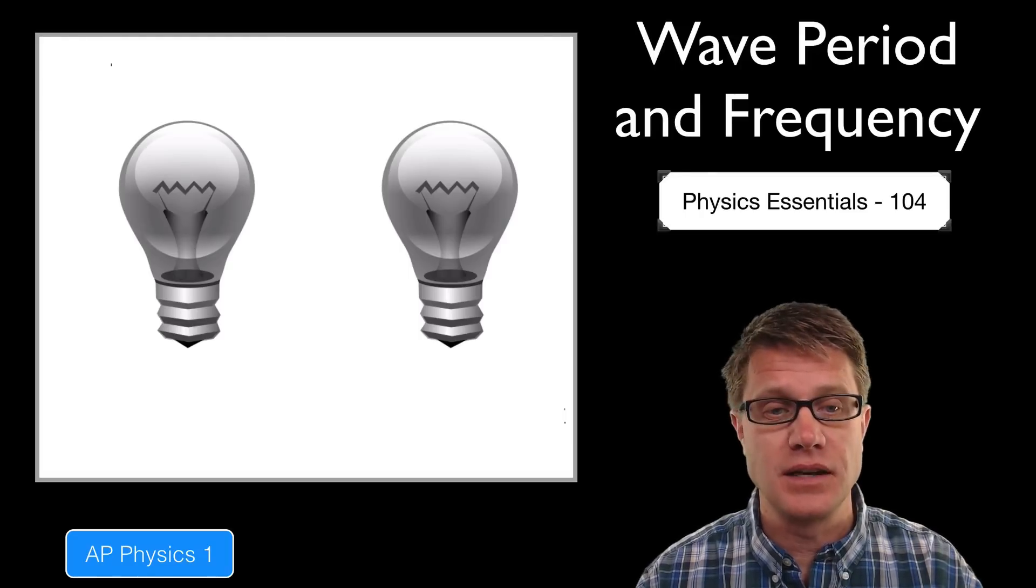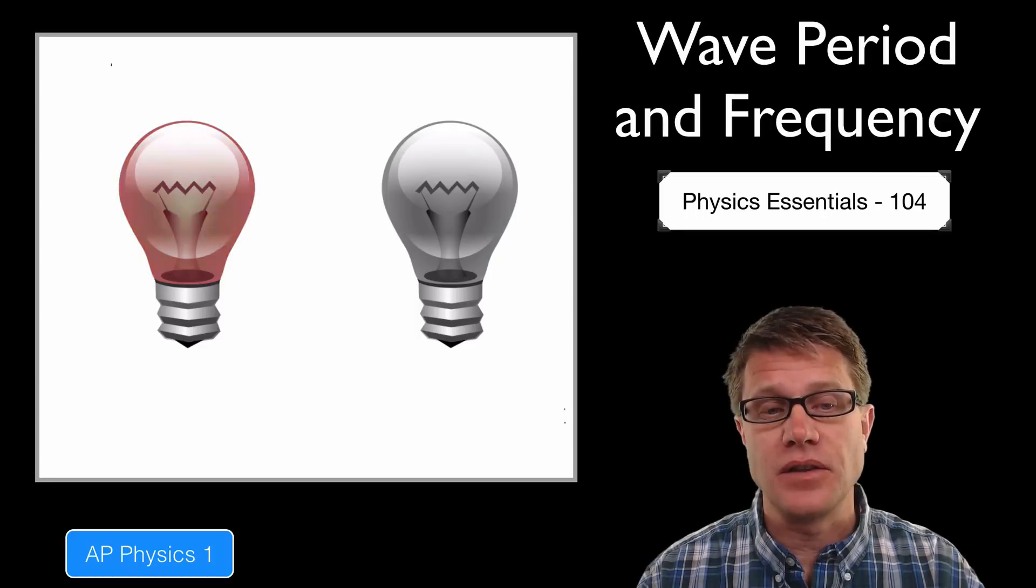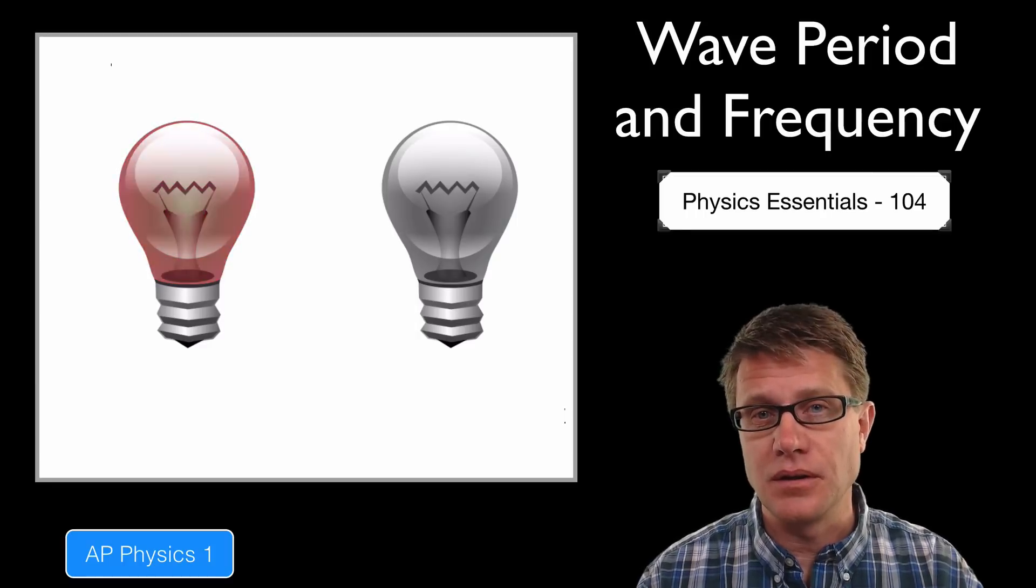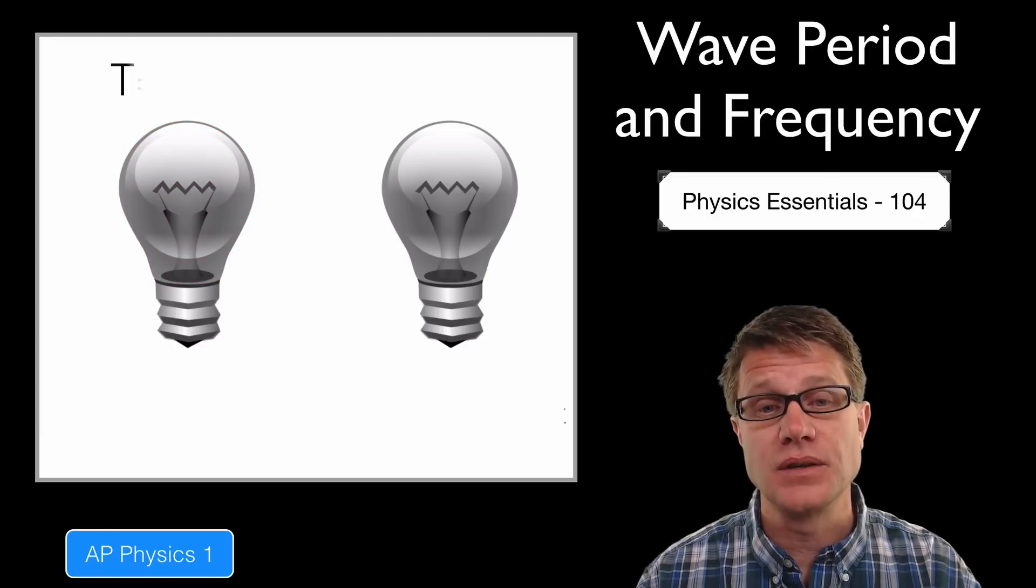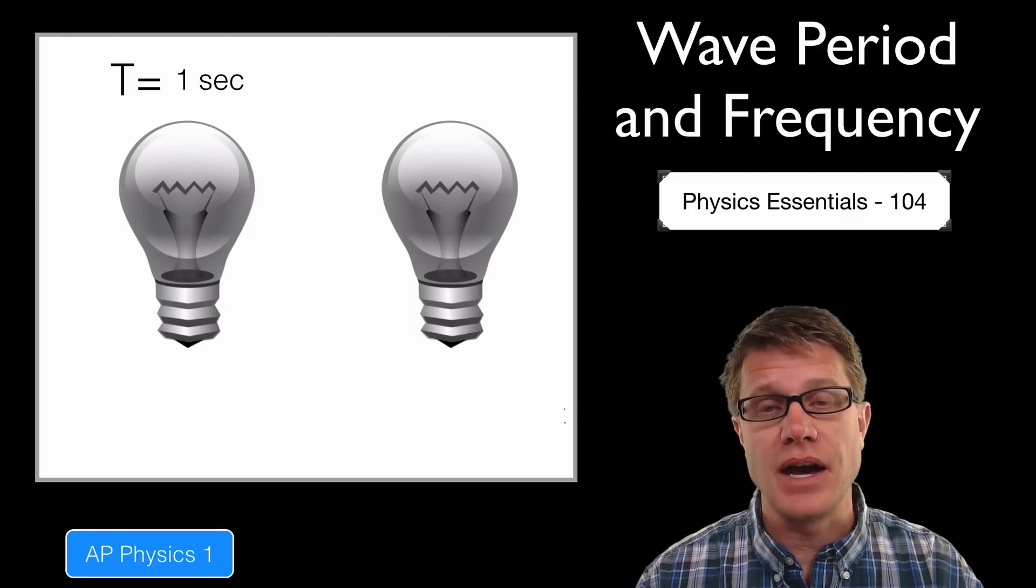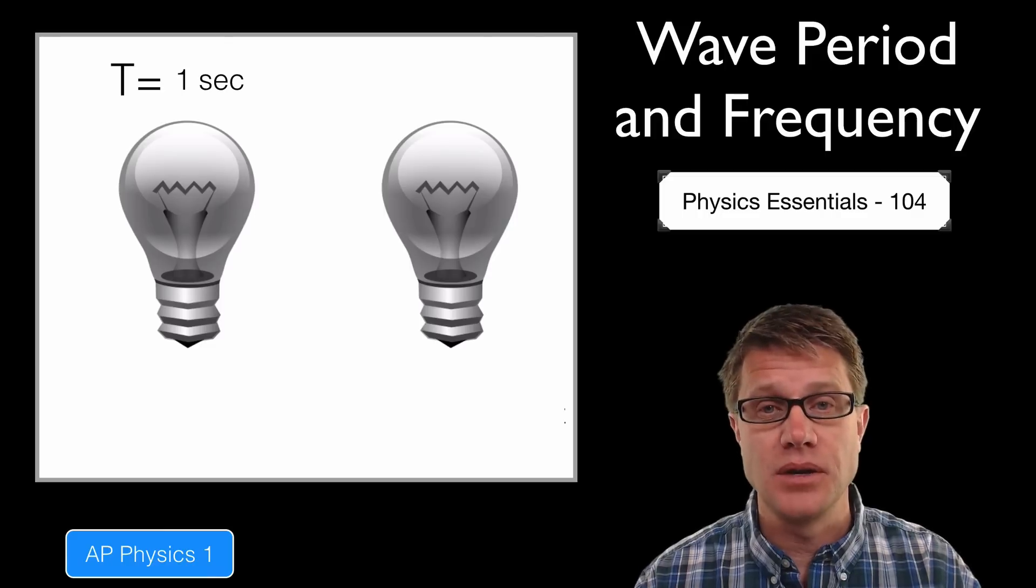The light on the left is flashing. Try to figure out the period - how much time is there between each flash? The right answer is there is one second, and so the period or capital T is one second. There is a flash every one second. That's the period.